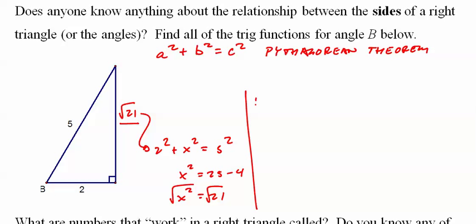So you have to do this step first before you can find sine of angle B. Hypotenuse, adjacent, opposite.